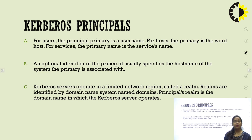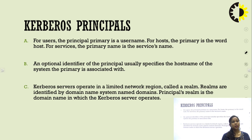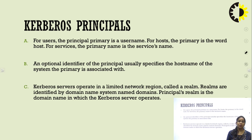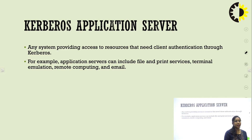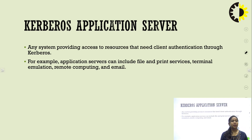There are three different principals defined in Kerberos. For a user, the principal primary is the username. For a host, the primary is the word 'host'. For a server, the primary name is the service name, with an optional identifier specifying the hostname. The Kerberos server operates in a limited network region called the realm, and realms are identified by the domain name system. Application servers — any system providing access to resources requiring client authentication through Kerberos — can include file and print services, terminal emulation, remote computing, and email.